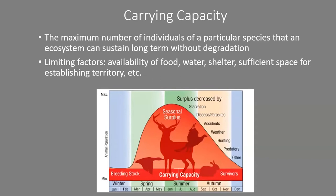In a natural unfenced system, there are natural means to bring numbers down: starvation, disease, weather, hunting, and predators. This graphic shows that you've got a regular breeding stock and a long-term carrying capacity. You may have local spikes — impala numbers rise, they eat themselves out of house and home, predators have a field day with the surplus, a disease may knock them back down below normal carrying capacity, and eventually the population comes back up again.